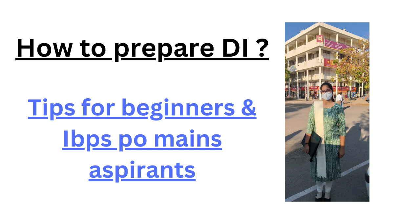For beginners who are starting the DI chapter, there are three to four chapters you need to know the basics of: average, percentage, then ratio and proportion. After covering these three to four chapters, switch to DIs. The basics of these questions are there in prelims level DIs, so try to watch some videos on prelims level DIs in the beginning. In one to two days you will understand the basics and can practice 10 to 15 DIs of prelims level.